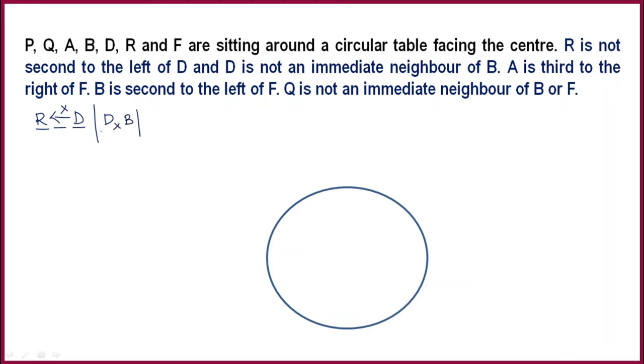Next: A is third to the right of F. Next: B is second to the left of F. Then: Q is not an immediate neighbor of B or F.